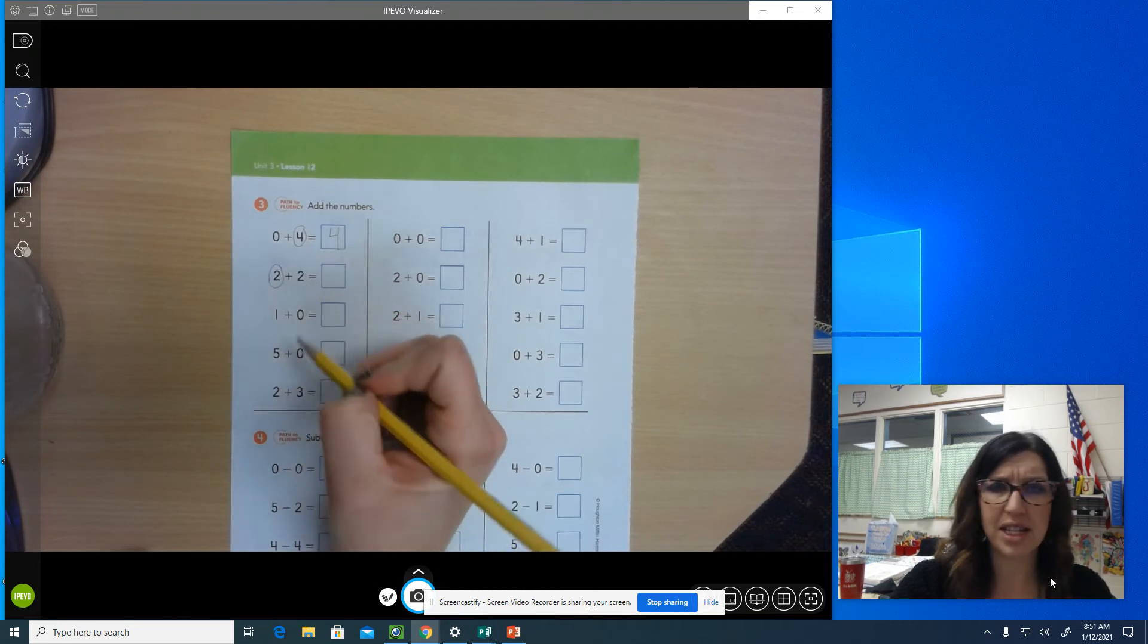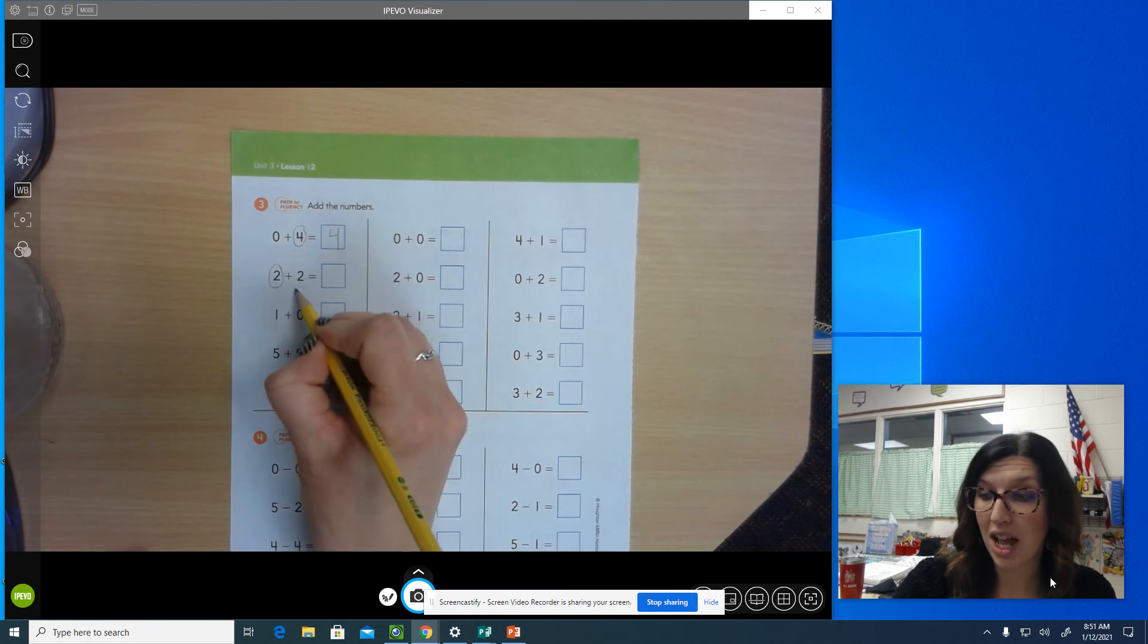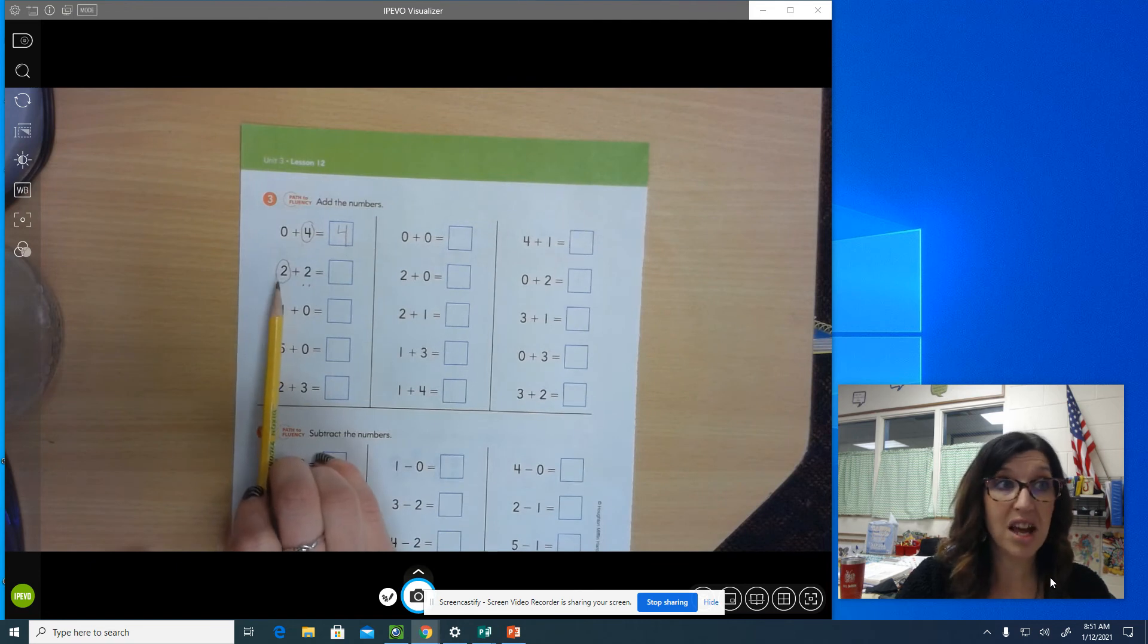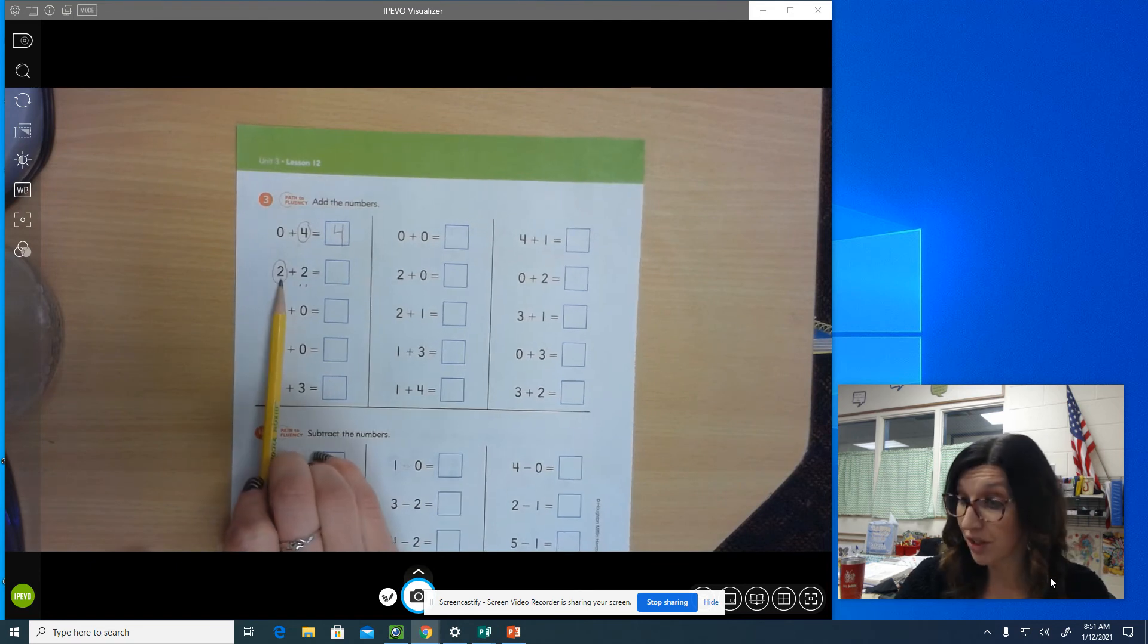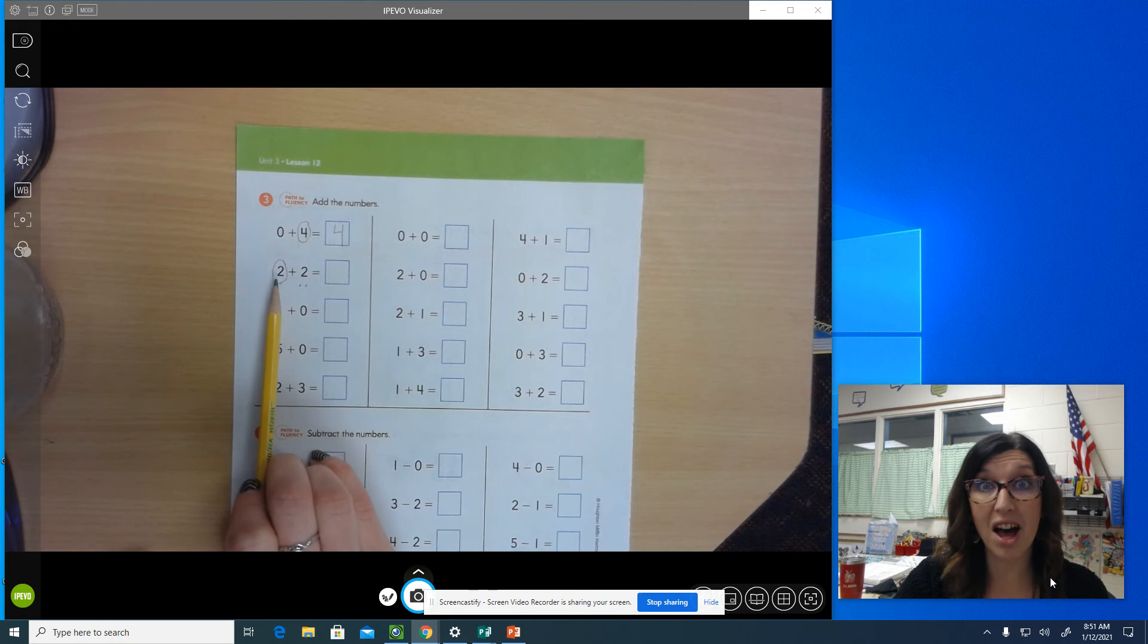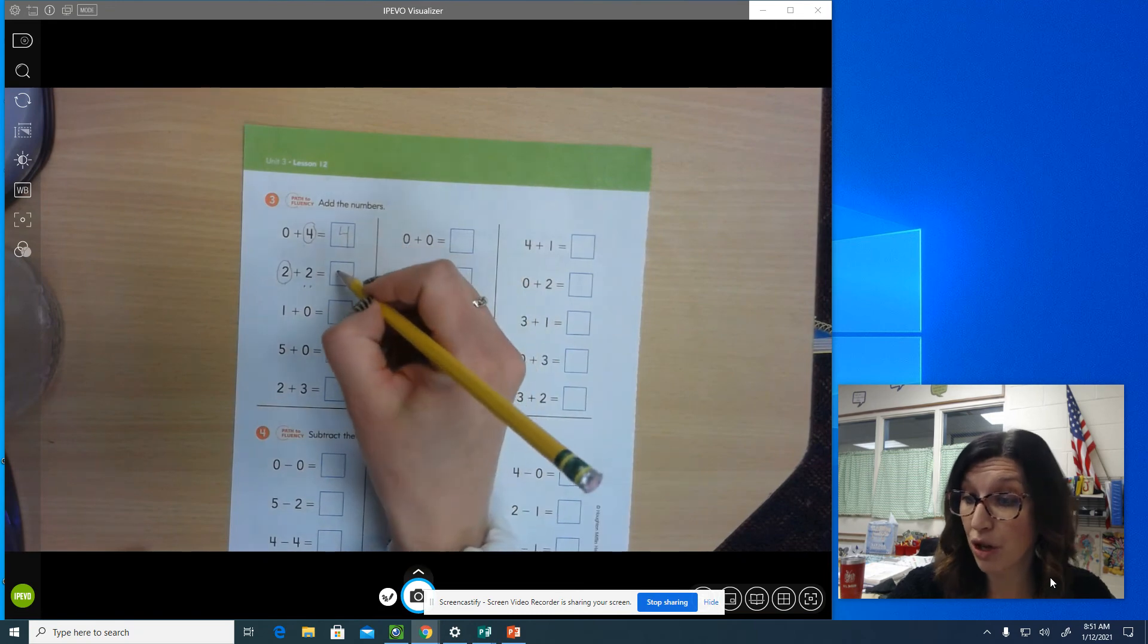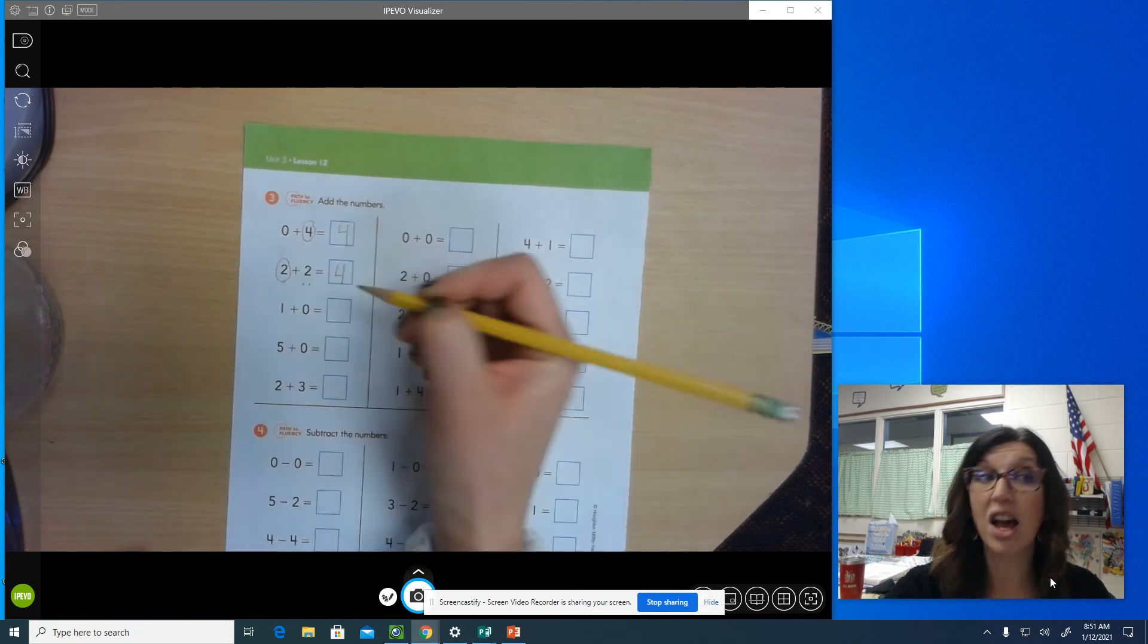So how many dots do I have to draw for this number? Two. Then I'm going to practice counting on. I say the number that I circled first. So everybody what number? Two. Then I count on. Say it with me. Two. Three. Four. So two plus two equals four.